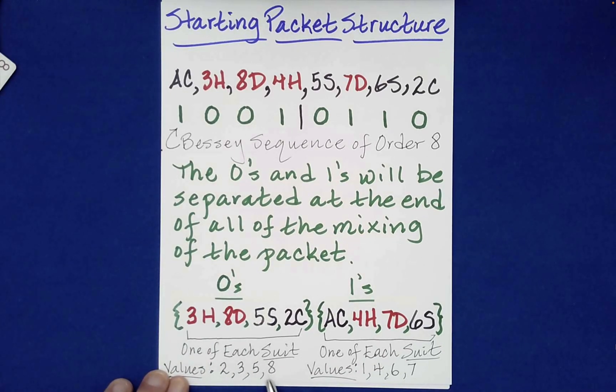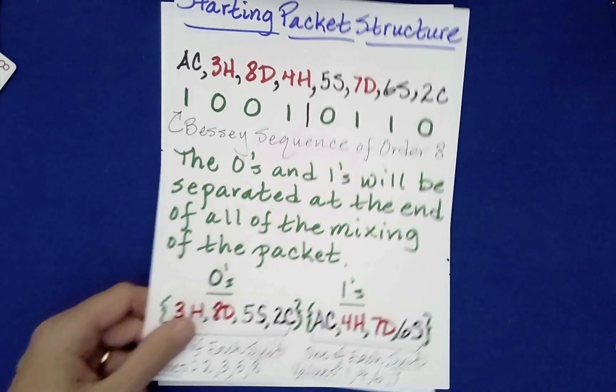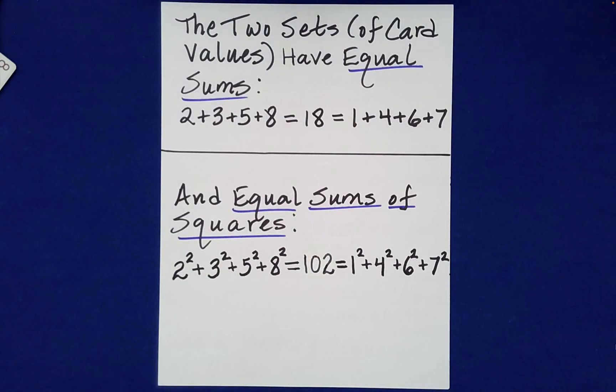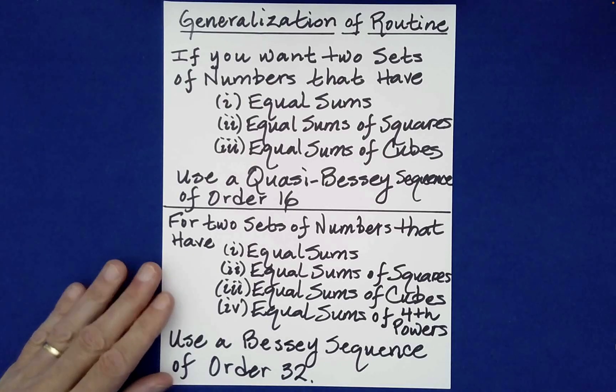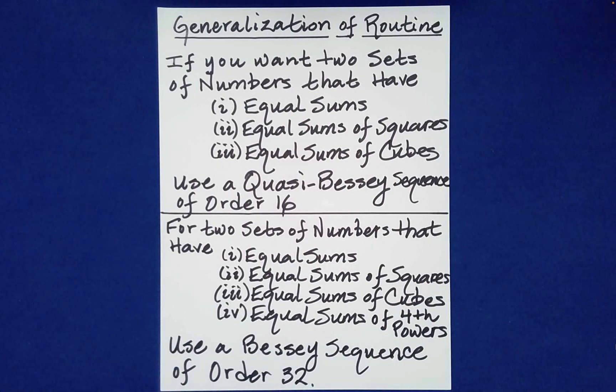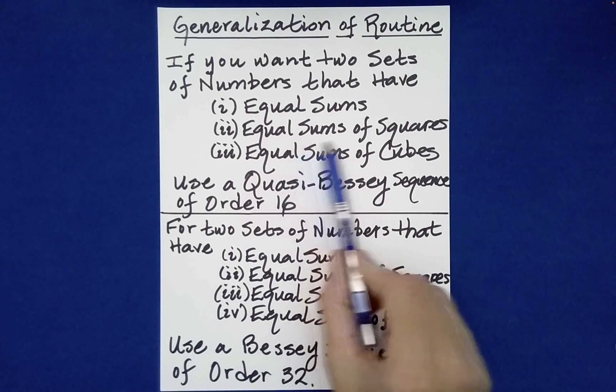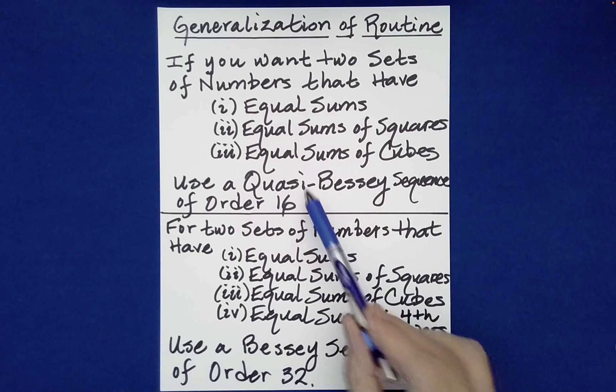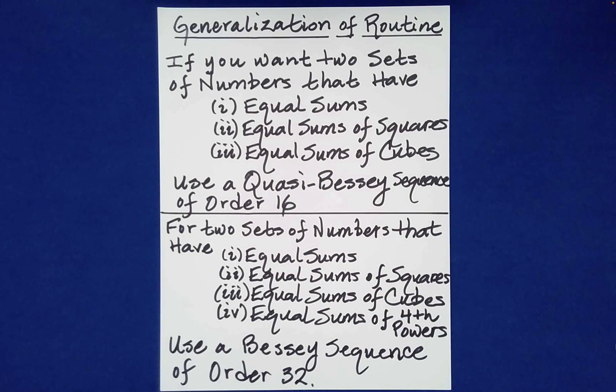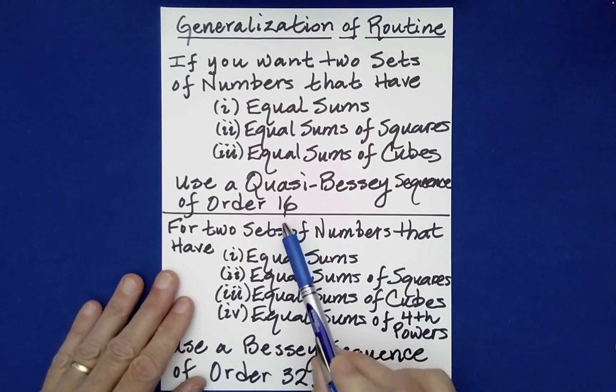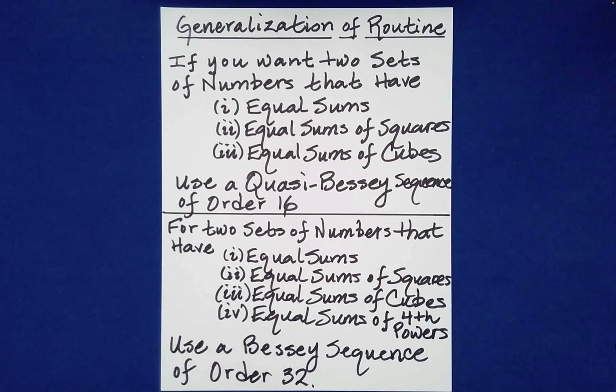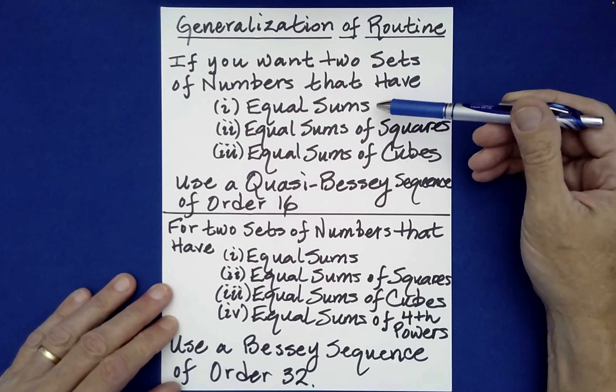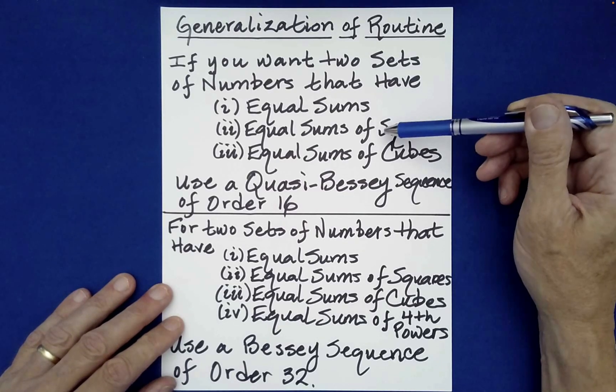Now the card values are 2, 3, 5, 8, 1, 4, 6, 7. Those two sets of numbers end up being very special ones in number theory. This is a very unusual property. So let me just mention the generalization. So if you're wanting two sets of numbers that have equal sums, which we had, equal sums of squares, which is what we had, but then you want equal sums of cubes, you can use a quasi-Bessie sequence of order 16. And those are talked about on my channel. And I'll include a link to the playlist that talks about Bessie sequences and quasi-Bessie sequences. So this is having the original numbers added to the same thing, the squares and the cubes.